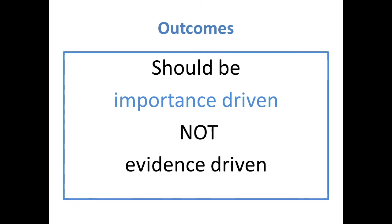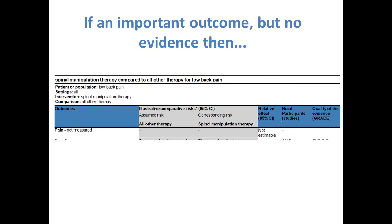In this case, the review authors did not find data for one of their primary outcomes, pain, but they still included it in the table because it is important to decision making, and noted that the outcome was not measured.